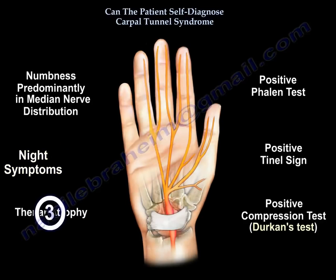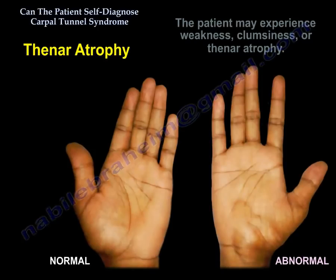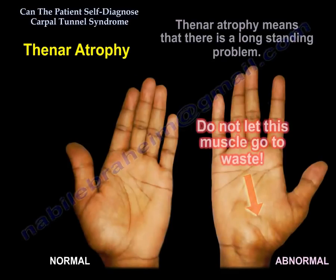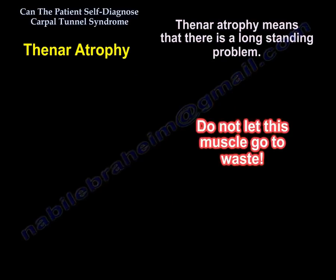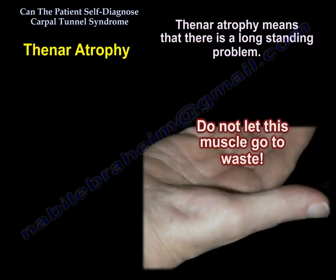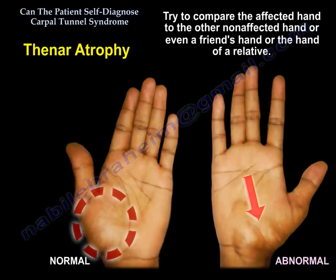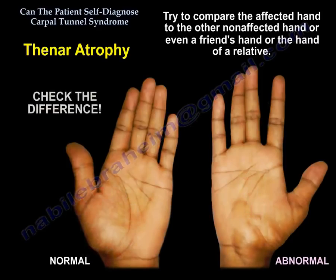Another clinical presentation is thenar atrophy. The patient may experience weakness, clumsiness, or thenar atrophy. When you see thenar atrophy, it means it is a long-standing problem — don't let this muscle go to waste. Try to compare the affected hand to the other hand which is not affected, or compare it to the hand of a friend or relative to check the difference.